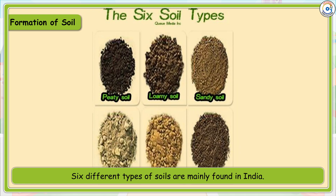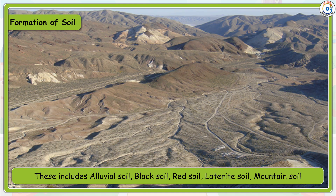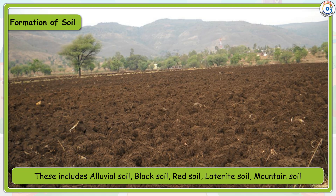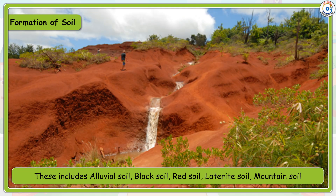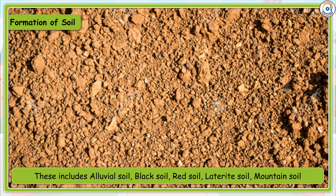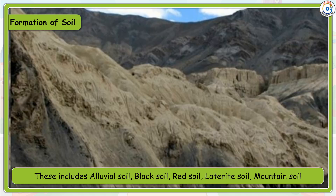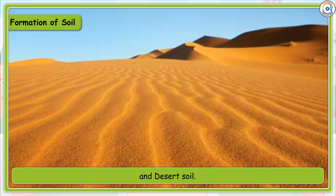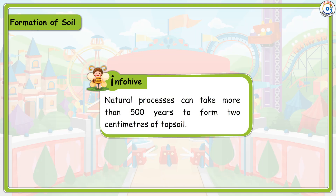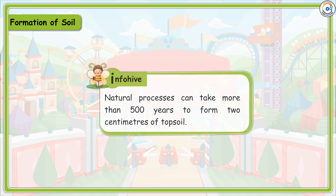Six different types of soils are mainly found in India: alluvial soil, black soil, red soil, laterite soil, mountain soil, and desert soil. Natural processes can take more than 500 years to form just 2 cm of topsoil.